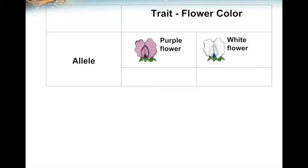Let's look at examples using Mendel's pea plants. For the trait of flower color, Mendel saw two versions or alleles — some pea plants had purple flowers, other pea plants had white flowers. He took a purple flower parent and made it reproduce with a white flower parent, and all of the offspring had purple flowers, so Mendel said that purple flowers were dominant to white flowers. We will represent the purple flower with a capital P. White flower is the recessive allele, since it was hidden by the purple flower allele, and we represent it with a lowercase p.